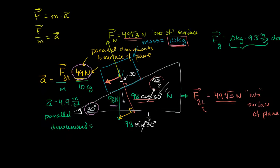Now let's say that acceleration wasn't happening. Let's say you look at this system and the block is just stationary. For the sake of argument, let's assume it's not ice on ice — let's assume they're both made out of wood. Now we have a situation where the block is stationary. If it's not accelerating in the perpendicular direction, there must be zero net forces there. But if it's stationary as a whole, then there must also be zero net forces in the parallel component.